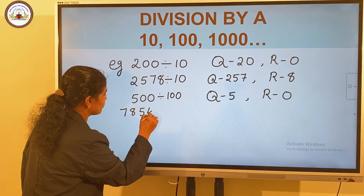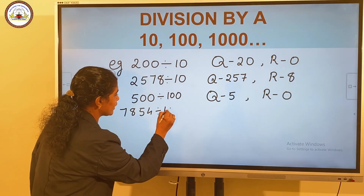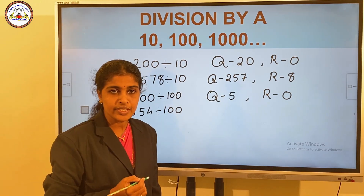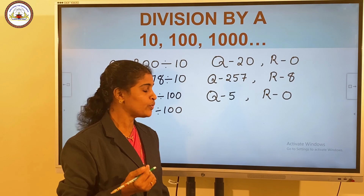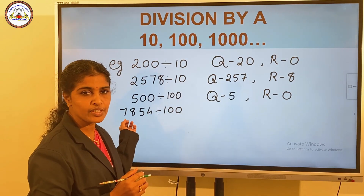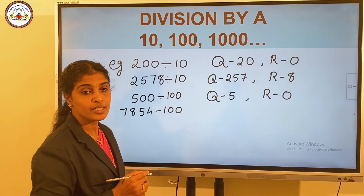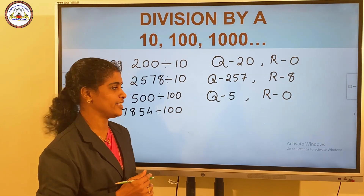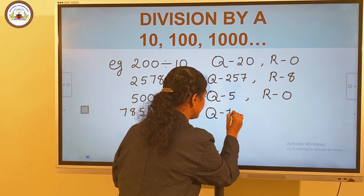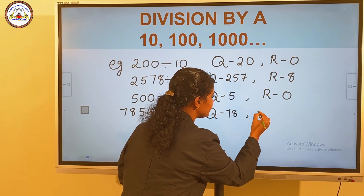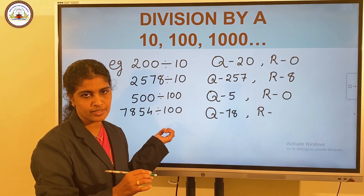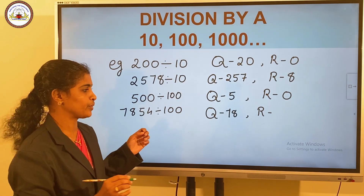Another example: 7,854 divided by 100. Here, the quotient is found by removing the ones and tens places. After removing those, we get the quotient as 78. The remainder is the number formed by the last two digits, which is 54.